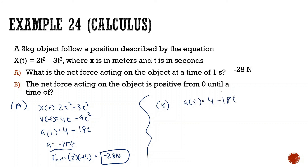Setting acceleration to zero: at t = 0, acceleration is 4 m/s². We want to find when it starts to become negative, so we set 4 − 18t = 0.